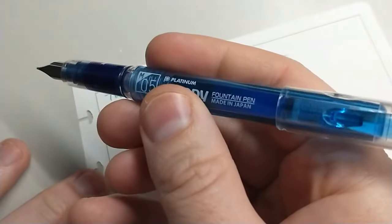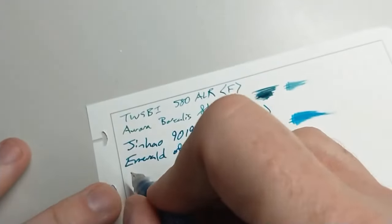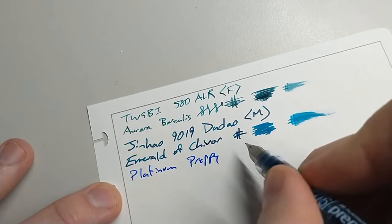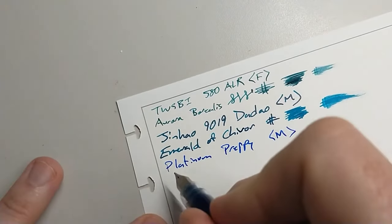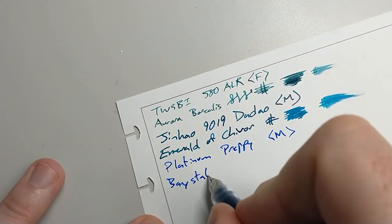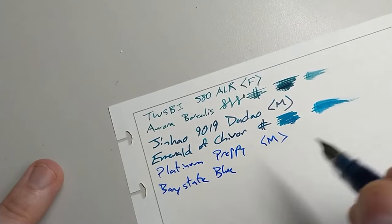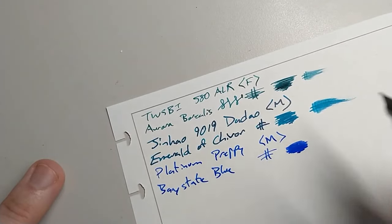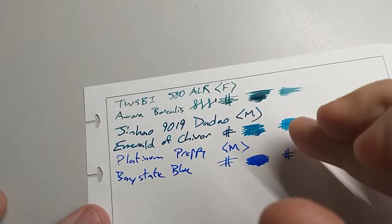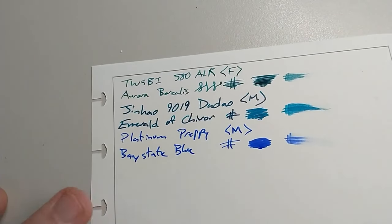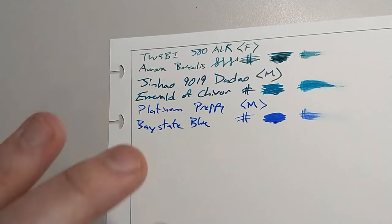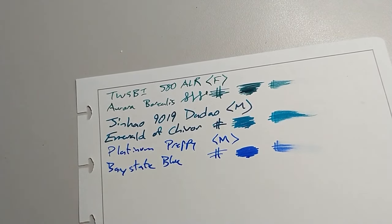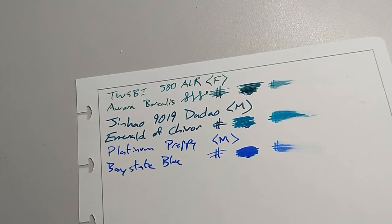Up next is a Platinum Preppy. I've got this in the 05, so medium. And I have the infamous Bay State Blue. This blue just really pops. I'm glad that I've been able to try it — I can see what people are talking about. It's definitely nice. This one is probably the least fall of a color, but I have it inked up right now, so what are you going to do?